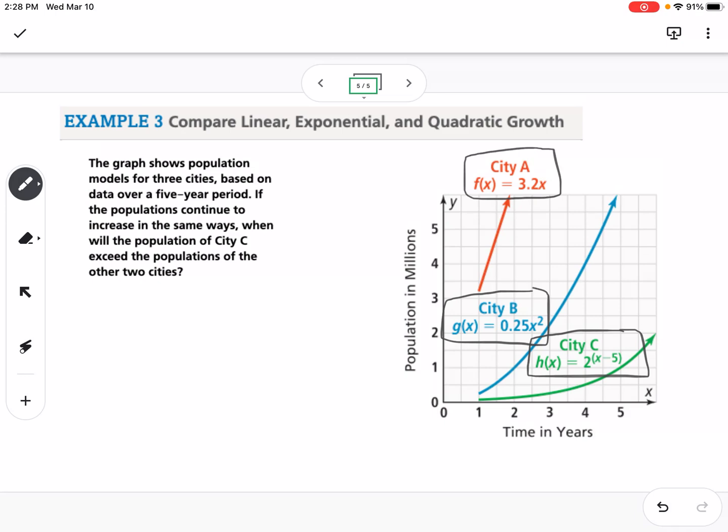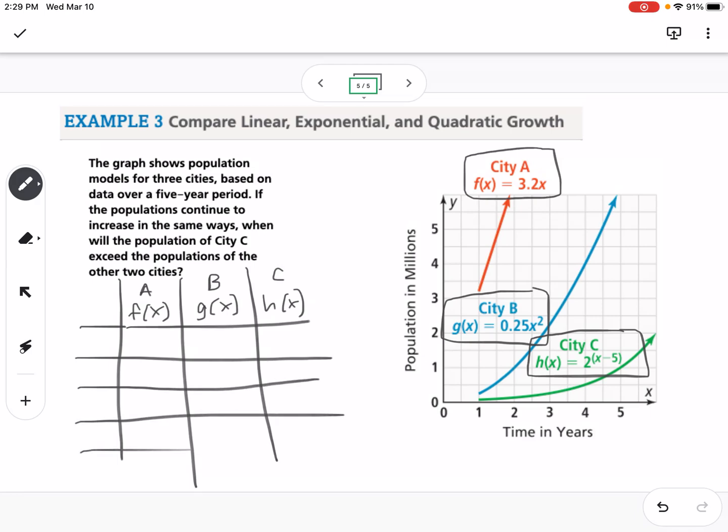So what we want to know is when will city C overtake the other two. So we have, let me label these. So we have F of X, which is A, we have city B, which is G of X, and we have city C, which is H of X. And then I'm going to plug in some X values. So there's two ways we could go about this. We could do a table, or we could graph it. So you could go to Desmos, type in desmos.com, and you could type in each of these different equations and look to see where that third equation exceeds the other two graphs. That's one way.